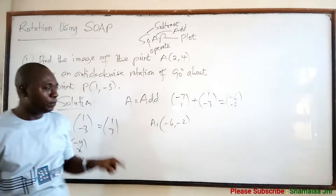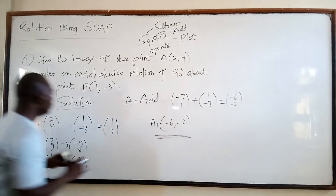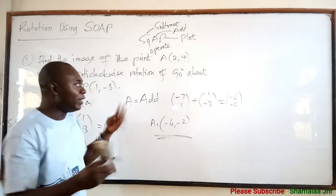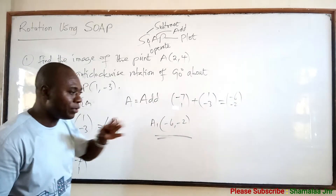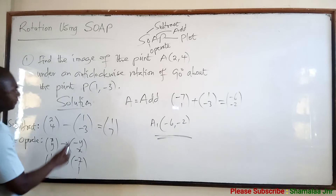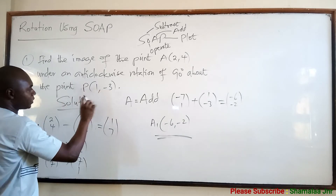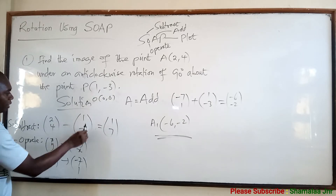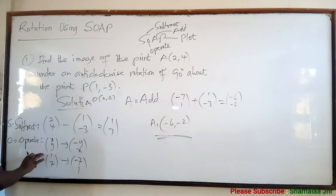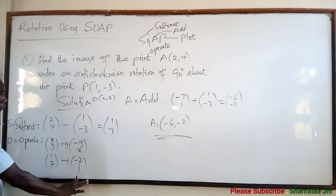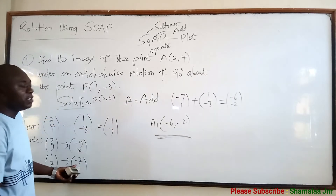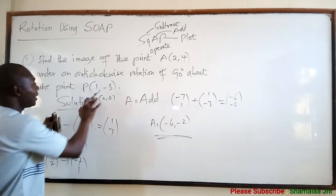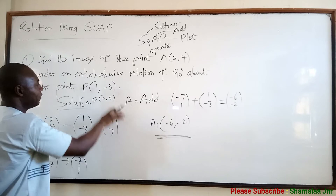When you are asked to plot it, that is when the last step P — Plot — comes in. This is how to use the method known as SOAP to find the image of a given point under a rotation through a given angle about a point other than the origin. Note: if the rotation were about the origin, point P would be (0, 0), and subtracting zero changes nothing, so the method is consistent with the standard formula.